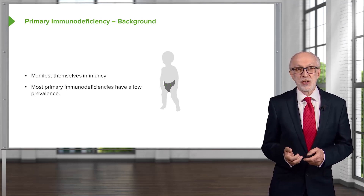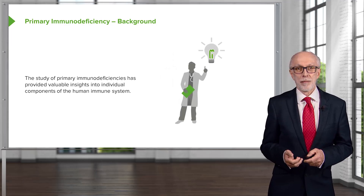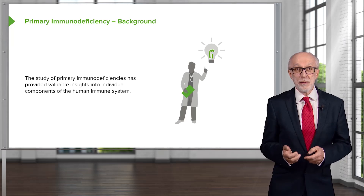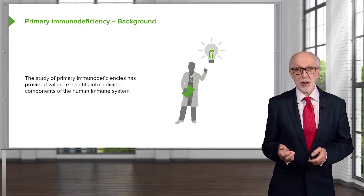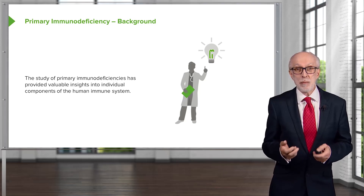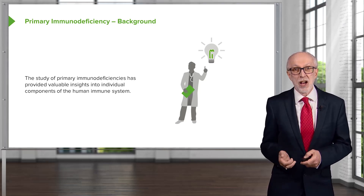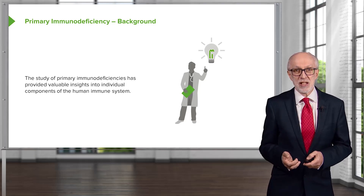Most primary immunodeficiencies have a low prevalence — they are fairly rare diseases, generally speaking. However, the study of primary immunodeficiencies has provided valuable insights into individual components of the immune response. Although they are relatively uncommon, they have enabled us to answer questions about how the immune system functions, because we can identify individuals that have one particular component of the immune system that is dysfunctional due to these inherited gene defects.